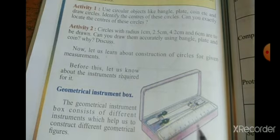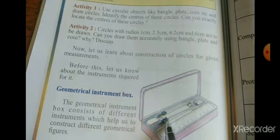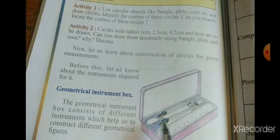What type of instruments having in this box? This is the scale, compasses, dividers, set squares, and what?